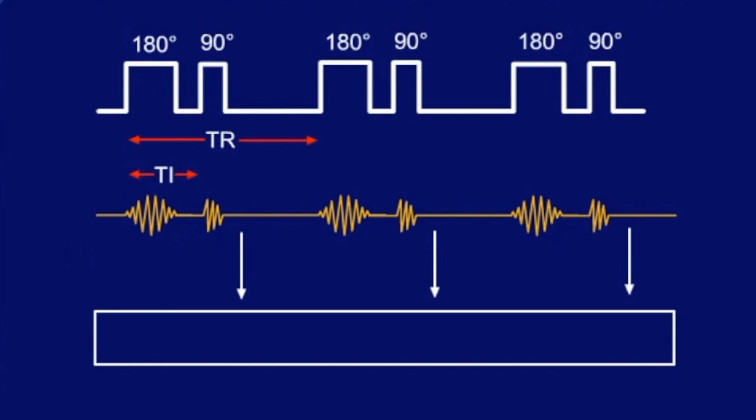T1 determines how fast the longitudinal magnetization goes back to its original value. So we get a T1-weighted image which is even more T1-weighted than partial saturation recovery images.